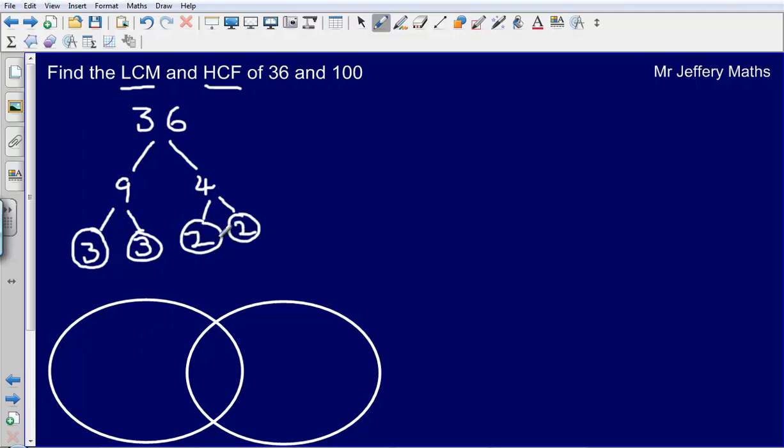Again, 2 is a prime number so I've circled both of them. So I could say that as a product of prime factors, 36 is the same as 2 times 2 times 3 times 3.